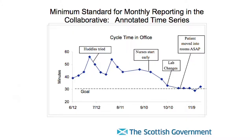That's an example of a run chart — a run chart should tell a story. You plot the data regularly over time and use annotations to say what you did at certain points in the process. You can see changes were made — to puddles, nursery start, lab changes, and patient moved into rooms — and doing all four things led to achieving the goal. So it's about collecting data regularly and plotting it over time.